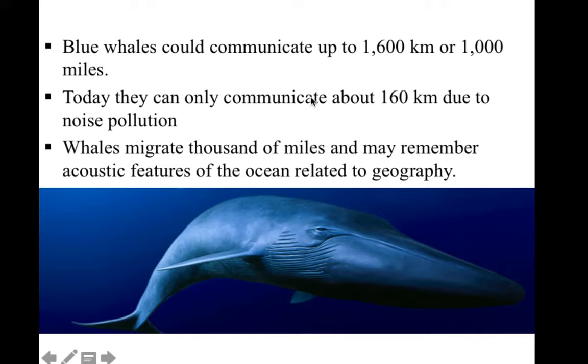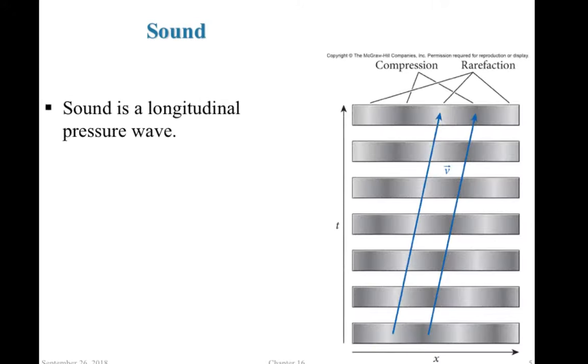And because of noise pollution, they can probably only communicate about 160 kilometers. And now, whales migrate thousands of miles, and they probably have some way to recognize geographical features in the ocean using sound. So they remember how certain things sound, and when they get to certain markers, then they can change their migration course. And they can also swim in tandem with each other.